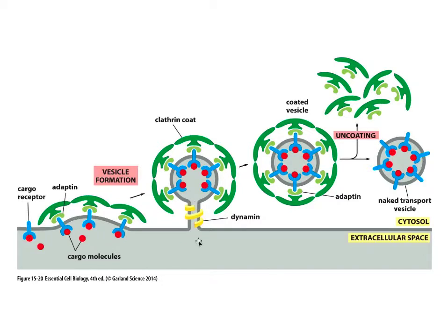The neck of the bud then has to be detached, but clathrin doesn't have enough energy to do that alone, so assistance is needed from other proteins. One of these is called dynamin. Dynamin uses GTP energy to drive itself into a tight constriction, which then pinches off the membrane between the vesicle and the original mother membrane. We now have a vesicle coated with proteins on the outside, and these proteins are recycled by being removed and utilized again for further invagination.